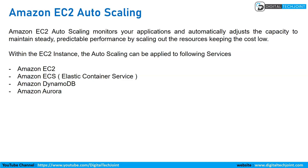Then we have Amazon EC2 Auto Scaling. As the name suggests, whenever your server instance is ready on the cloud and you want to make sure it does not fail during increased capacity, you use Amazon EC2 Auto Scaling. It automatically creates another instance during peak load and makes sure performance is not hampered.